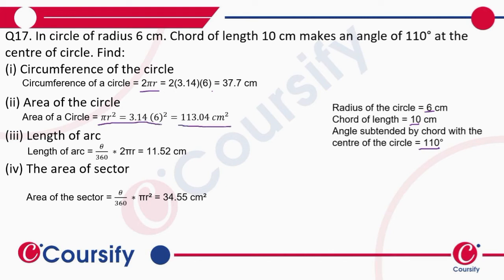For the length of arc, we know the formula (θ/360) × 2πr. We put the value of θ as 110 degrees and r as 6, and we get the length of arc as 11.52 centimeters. For the area of the sector, we know the formula (θ/360) × πr². We put the values of θ and r and get the area of sector as 34.55 centimeters squared.